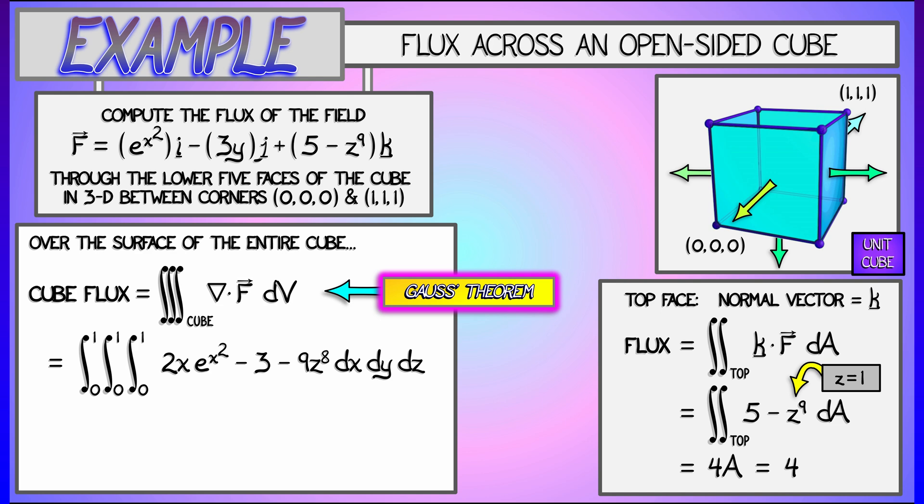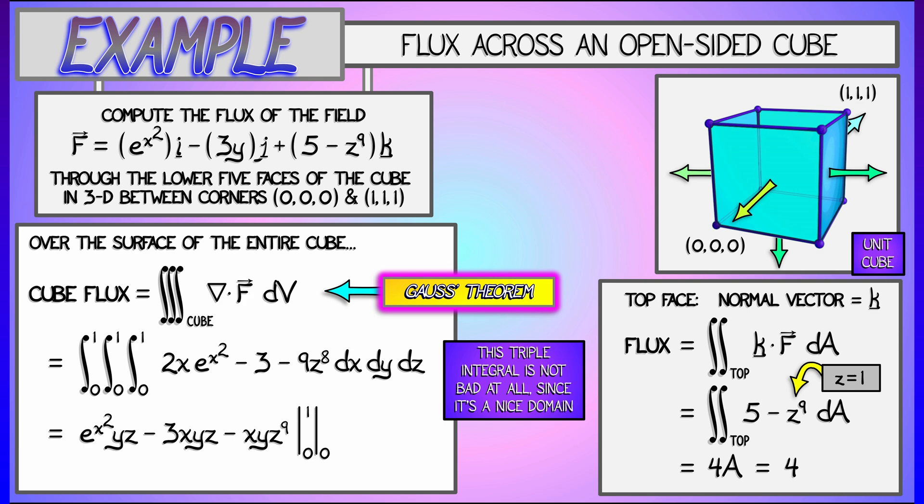I'm just going from zero to one in each case, and this breaks up into really three simple separate integrals. You can check that you get e to the x squared yz minus 3 times xyz minus xy times z to the ninth.